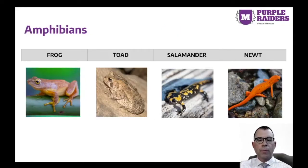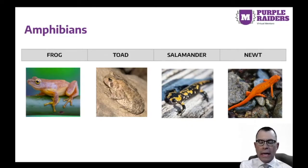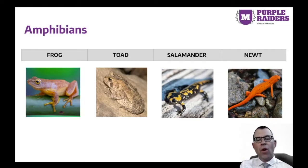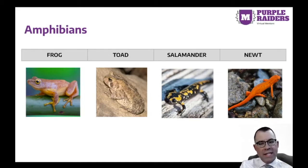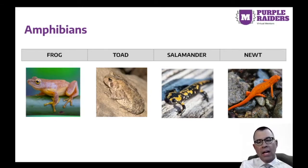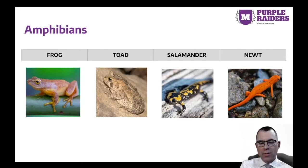The first group of animals with backbones are called amphibians. Almost all amphibians begin their lives in water. They often have smooth, moist skin. This helps them live on both land and water. Examples of amphibians include frogs, toads, salamanders, and newts.